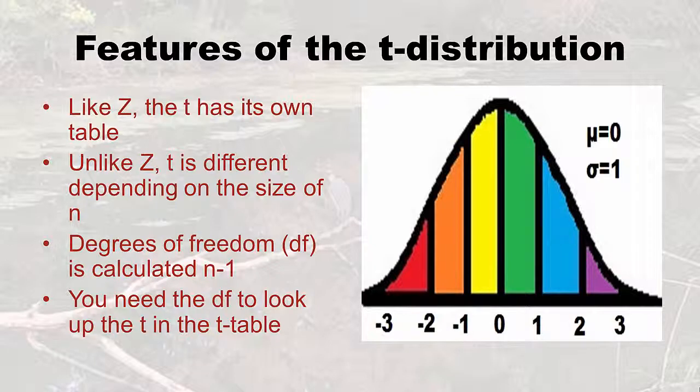Let's talk about Student's T distribution. What I've got on the slide is actually the Z distribution, so you can see the differences between Z and T. Like the Z distribution, the T has its own table — don't go to the Z table if you want to look up T. And unlike Z, T is different depending on the size of n. On the T table, you actually have to know this thing called degrees of freedom. How you calculate degrees of freedom is n minus one. So you can't get the degrees of freedom unless you know what n is.